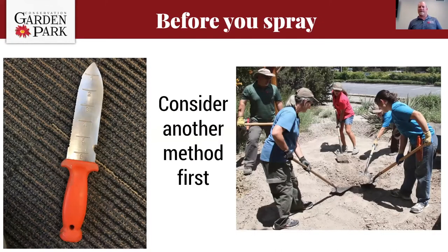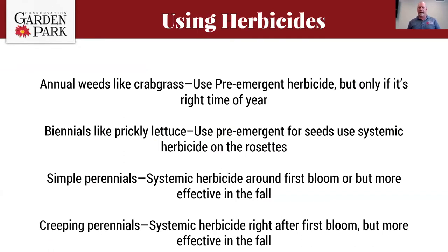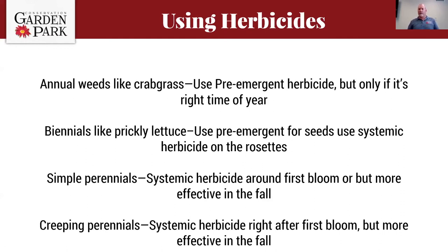Consider another method first — can you go out with a weed knife or invite friends over with shovels? If those will work, they may be your better options before breaking out pesticide. When you do use herbicides: for annual weeds like crabgrass use a pre-emergent timed when forsythia first blooms and water it in properly. For biennials like prickly lettuce, use a pre-emergent for seeds, but once the plant comes up use a systemic on the rosette. For simple perennials, use a systemic herbicide around the first bloom but more effectively in the fall. For creeping perennials, use systemic herbicide right after the first bloom, but again more effective in the fall — for field bindweed, as soon as you see two or three flowers, that's when source to sink starts to change and the herbicide can start traveling back down to the roots.